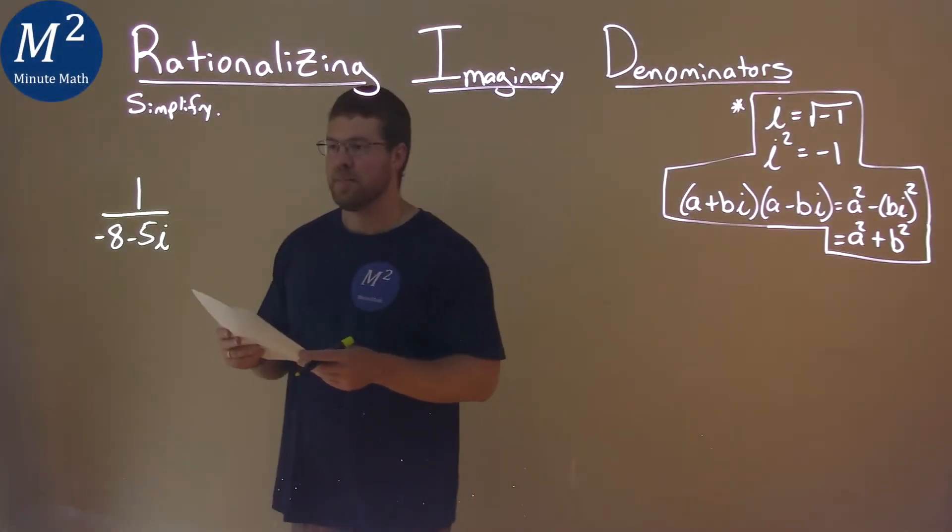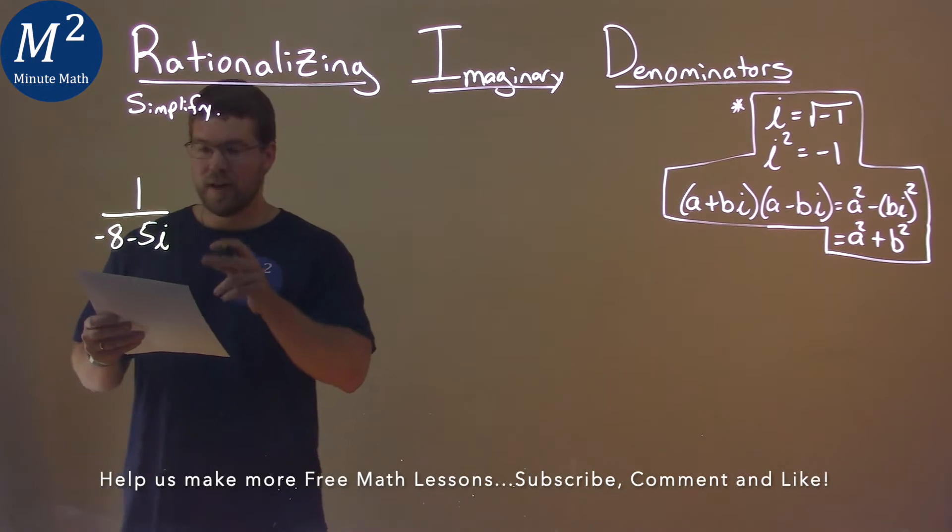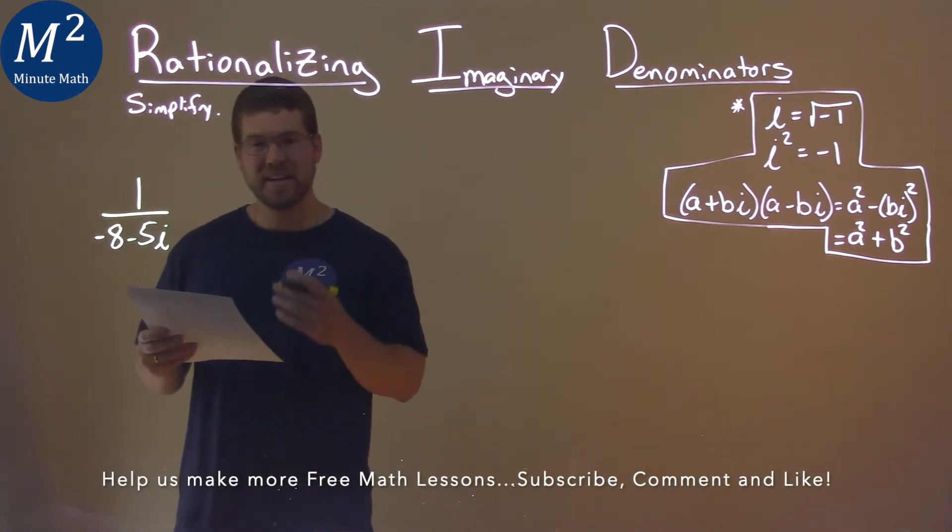We're given this problem right here. 1 over negative 8 minus 5i, and we've got to simplify this.